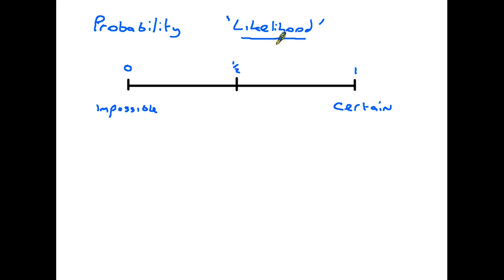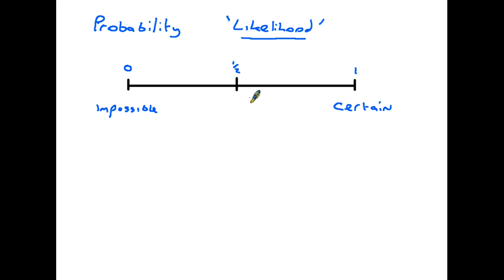To summarize: the probability of something happening is its likelihood. We ask ourselves how likely is it that something's going to happen — what are the chances? We measure probability on a probability line which goes from zero to one. If something has a probability of zero then it is impossible; if it has a probability of one then it is certain to happen. Everything else falls somewhere in between.